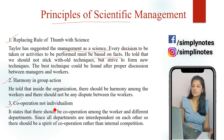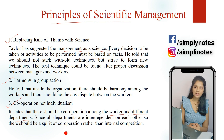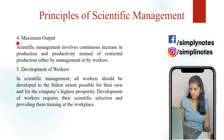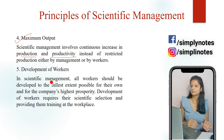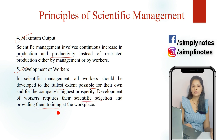The third principle is cooperation, not individualism. There should be cooperation among workers, between different departments, and between workers and management — mutual understanding honi chahiye, na ki internal competition. The fourth principle is maximum output — both management and workers should work towards increasing production and productivity. The fifth principle is development of workers — workers should be developed to their fullest extent possible by providing scientific training and developing their potential abilities to the maximum.